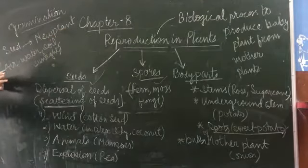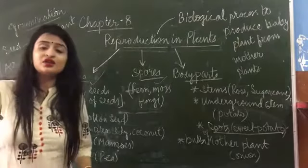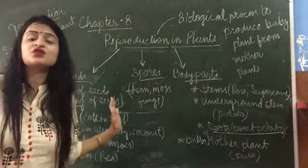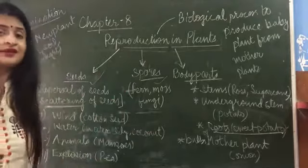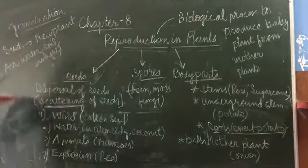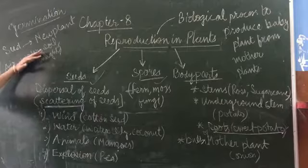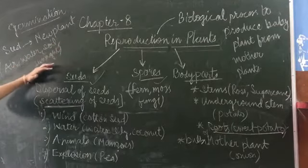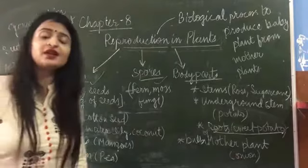Now, what conditions are needed for germination? Kin kin conditions mein yeh germination ka process pura complete ho sakta hai? The first one is air, then water, then soil, and the last one is sunlight. Proper sunlight is also necessary for the process of germination of seed.